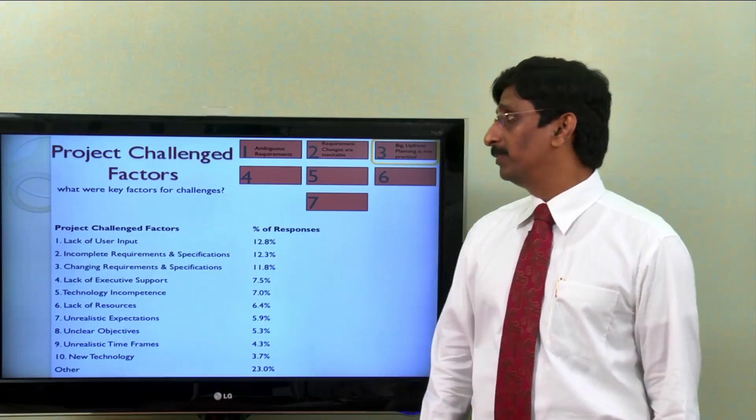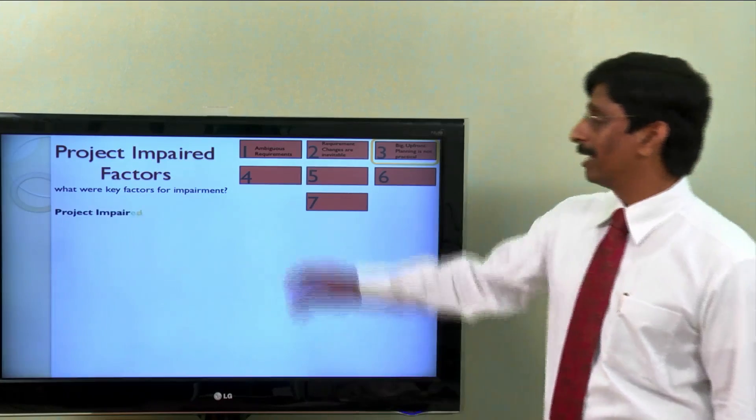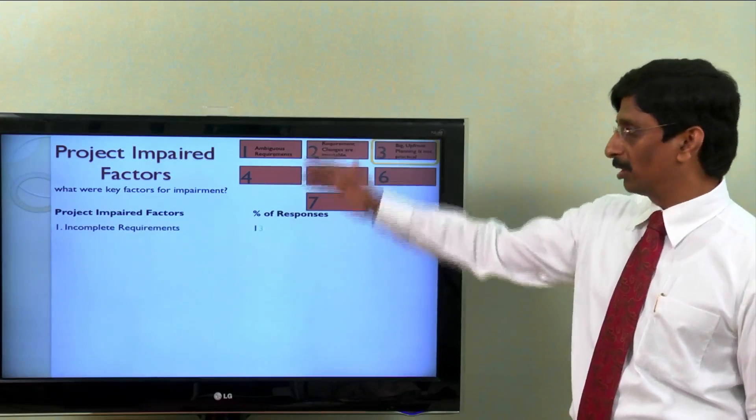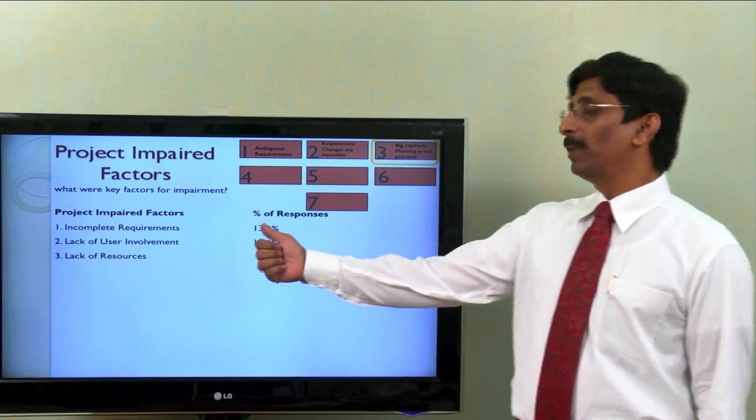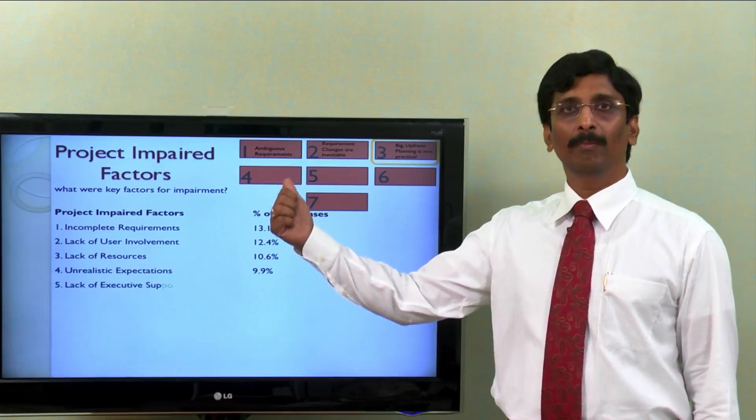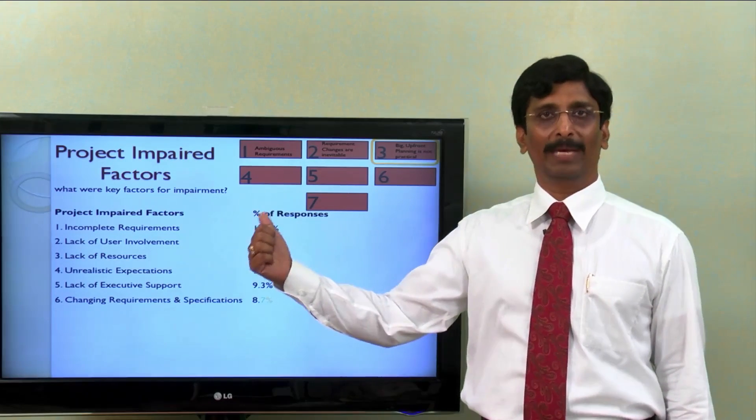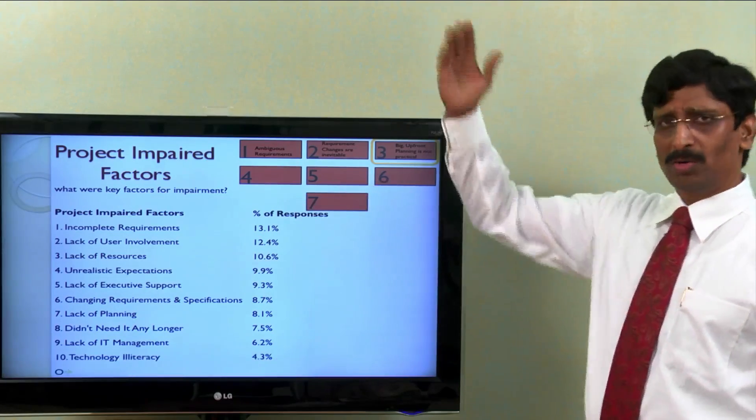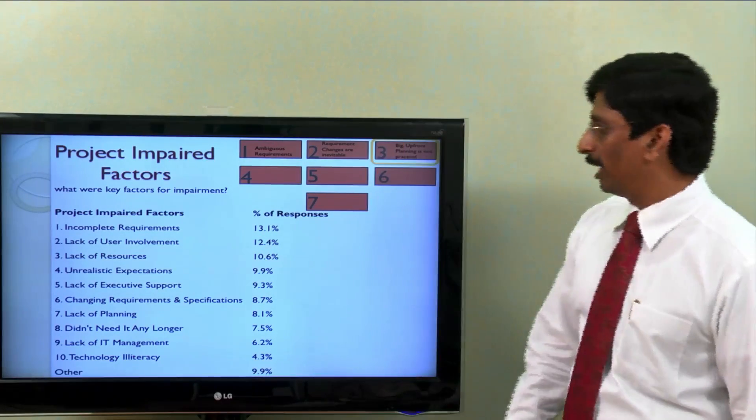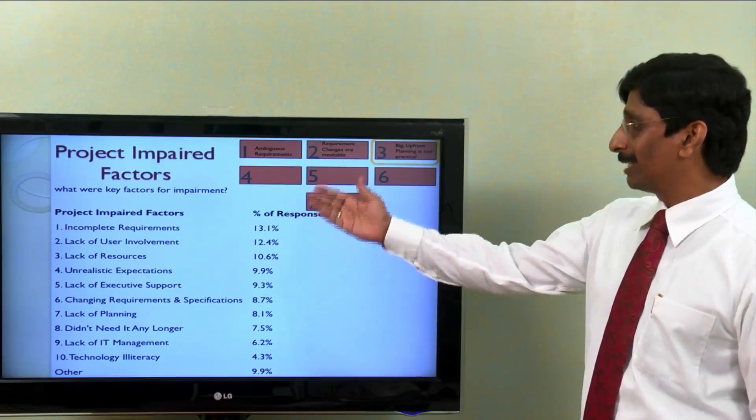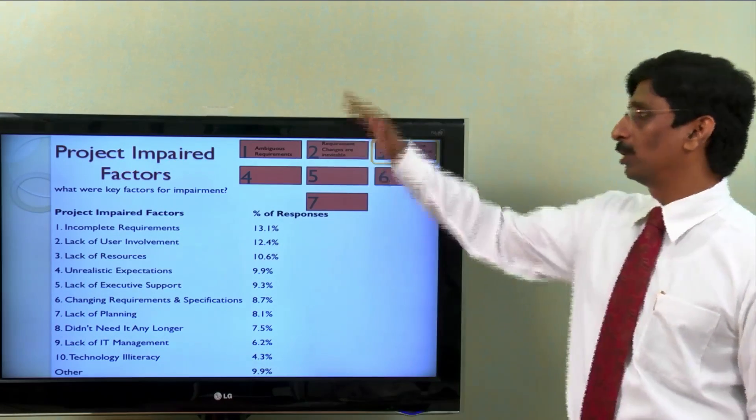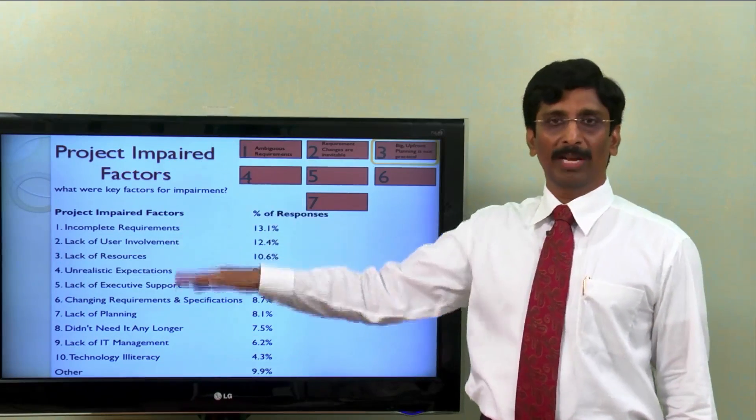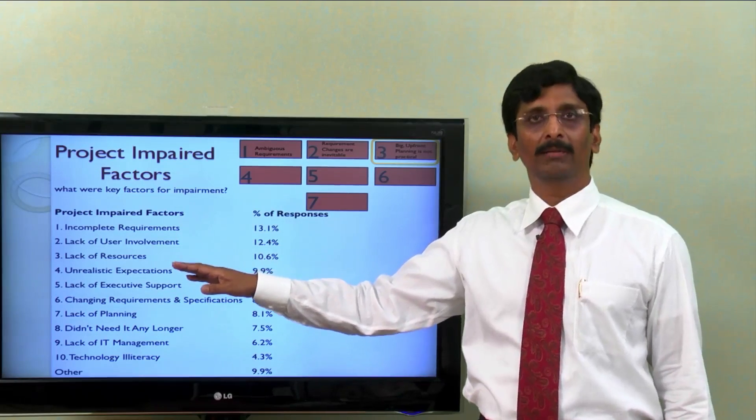They also came up with reasons for impaired projects. Here are the reasons: incomplete requirements - that is the major reason for projects to be cancelled. Lack of user involvement comes throughout in the top two or three. Lack of resources, unrealistic expectations, and all those. I'm sure many of these factors do happen in your projects, at least some of the projects.